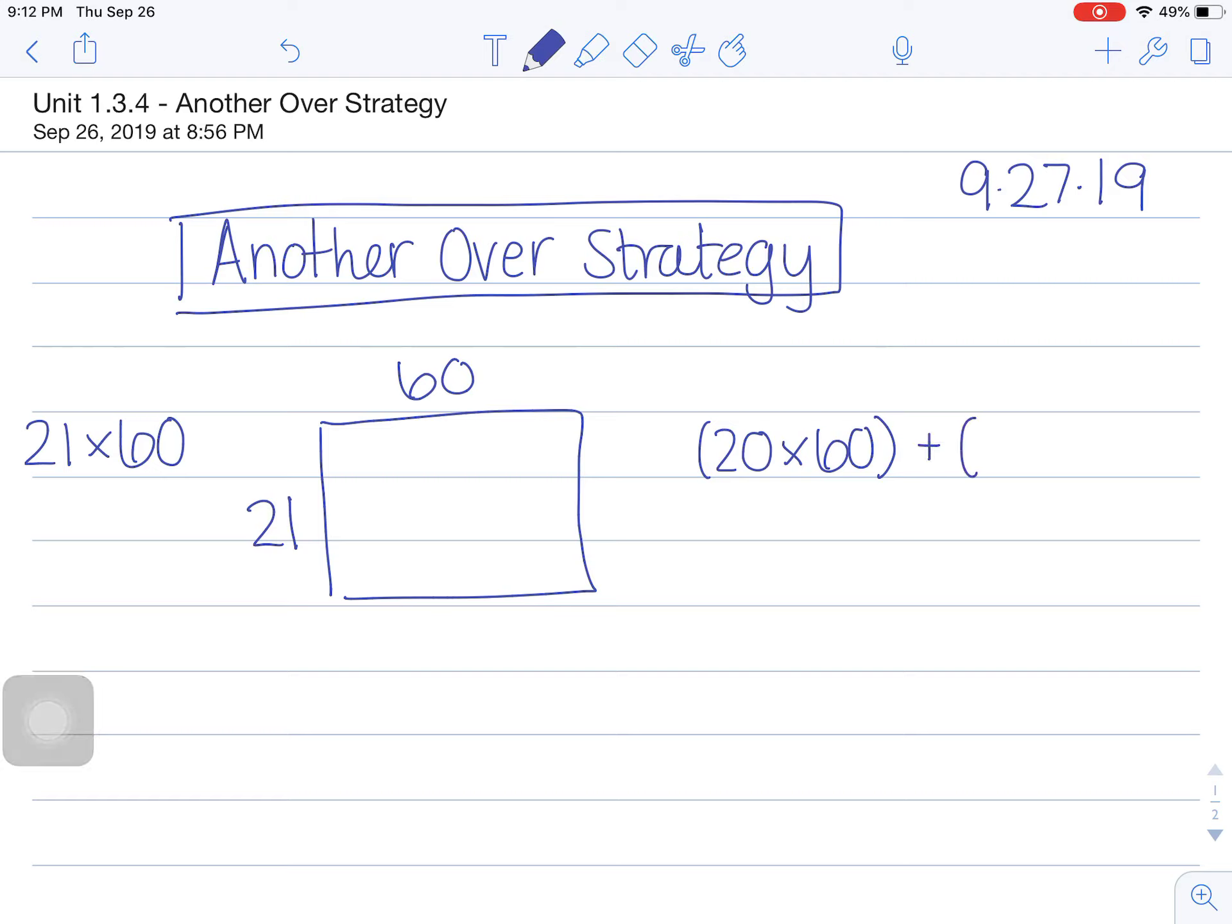But I'm not at my answer. I need to add one group of 60 to be able to solve. Breaking this apart may seem like partial products, but I'm actually using what I know, which is under, and adding one group of 60 to help me get to my actual answer. 20 times 60 I know is 1200.